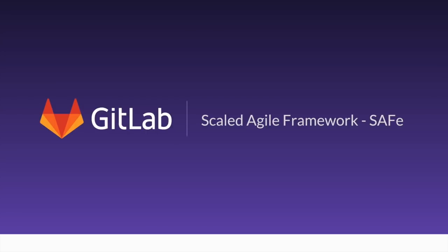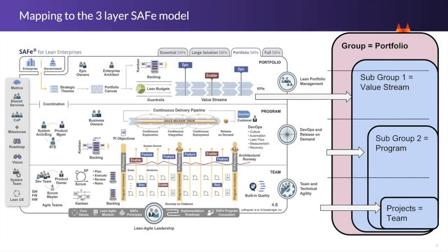When looking at GitLab and the Scaled Agile Framework, if your organization is moving towards SAFe, you align via groups and projects. At the portfolio level, the top parent group is the portfolio. A subgroup aligns with the value stream, then a second subgroup aligns with the program. There could be a third subgroup for scrum teams contributing to an Agile release train. Most of the work is done at the project level — the team level — where you create boards, issues, and user stories, and where dev work and testing happen.